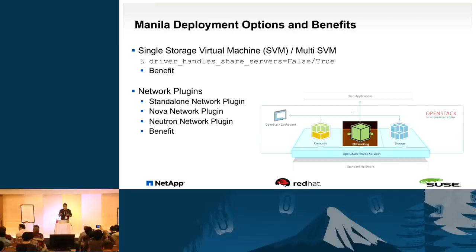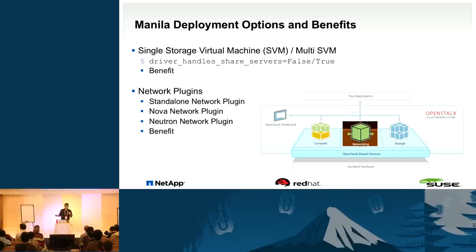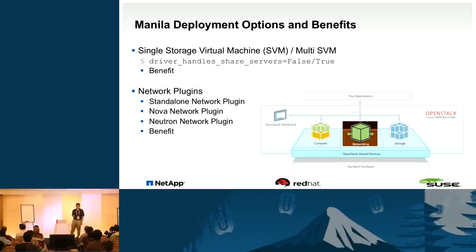Manila provides a number of different deployment options. First, you can have Manila manage as a single storage virtual machine or multiple storage virtual machines — Manila can manage the lifecycle of your share servers, or manage storage resources on a share server you've already set up, configured via a Boolean variable in the Manila configuration file. There are also three network plugins: the standalone network plugin, the Nova network plugin, and the Neutron network plugin, each configurable with different segmentation options.